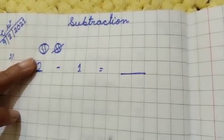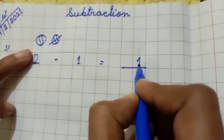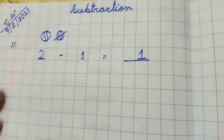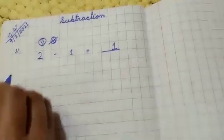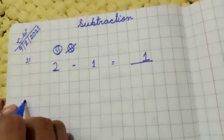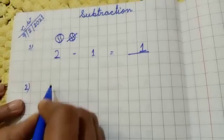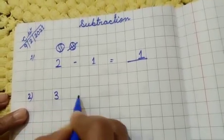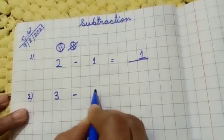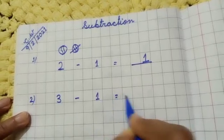Now I will cut one, I will remove from here. So how many left? One. So here I am writing one. Okay.